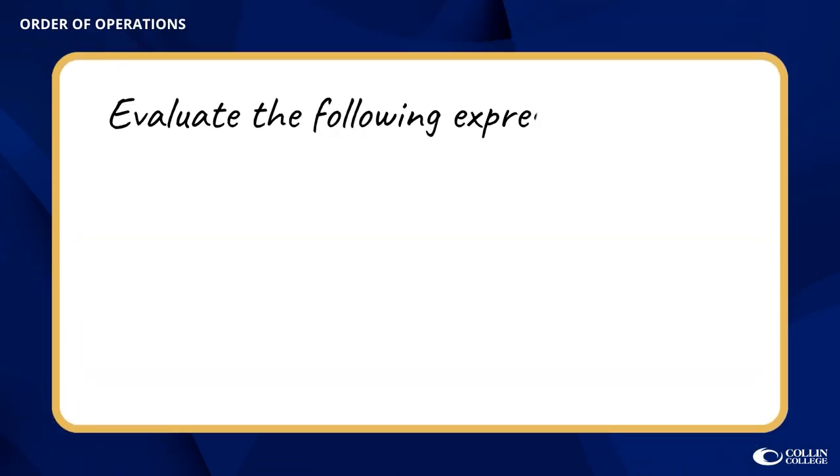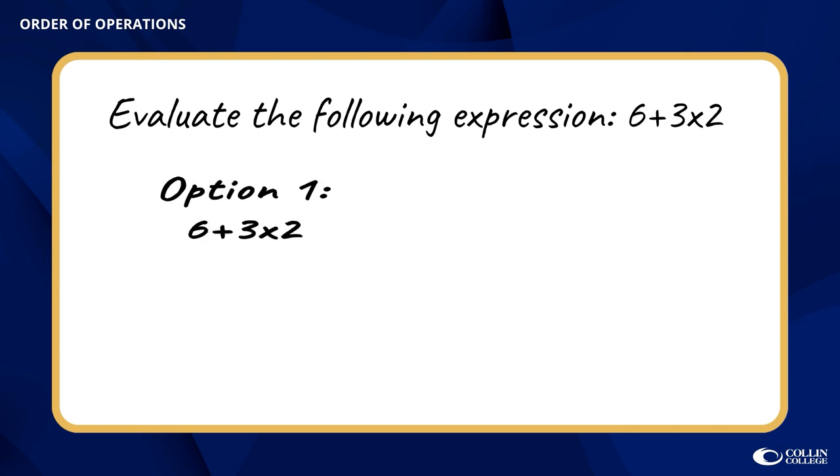Let's look at this numerical expression, 6 plus 3 times 2. There are really two ways that you could approach this. The first would be to add 6 plus 3 and then multiply by 2, giving you a total value of 18. The other option would be to start from the end and do 3 times 2 to get 6 and then add 6 with a value of 12. So which one is correct?